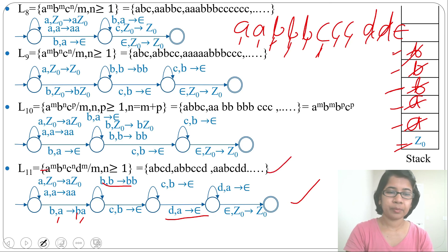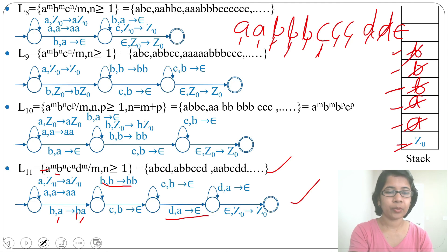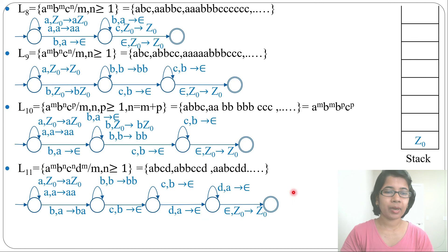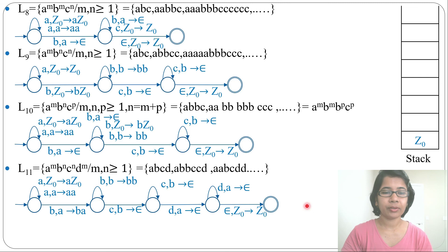This is the PDA for a^m b^n c^n d^m. To summarize: for a we push, for b we push, for c we pop b, and for d we pop a. Up to now I have designed 11 PDAs for context-free languages, and all are DPDAs. In the next lecture, I will design more PDAs for more context-free languages and will also discuss some NPDAs. If you have any doubts, just ask in the comments. Thank you.